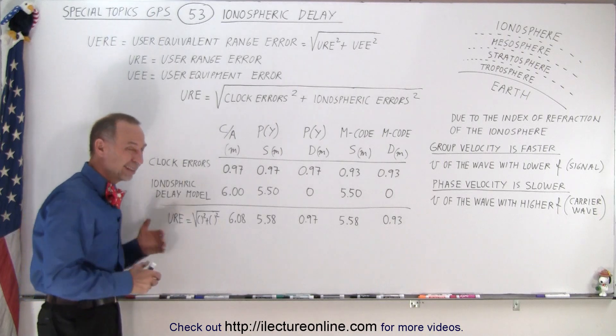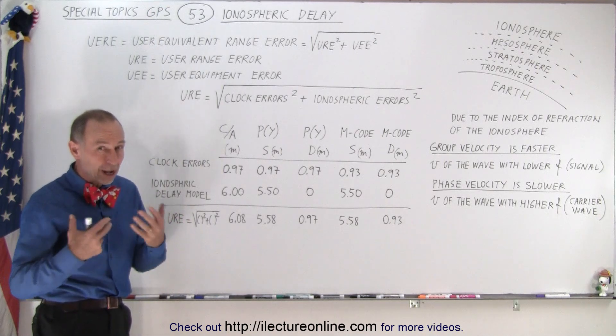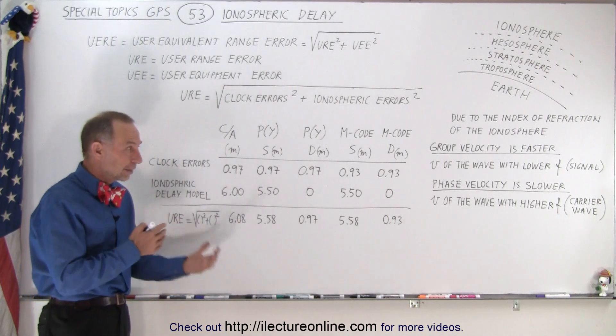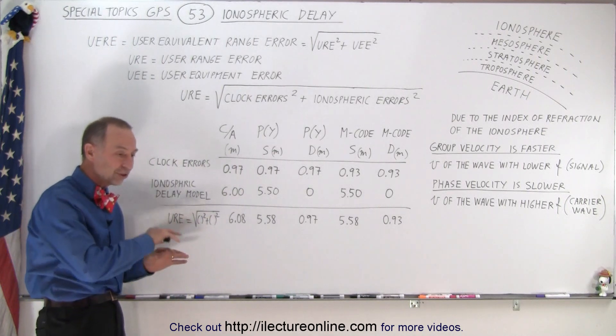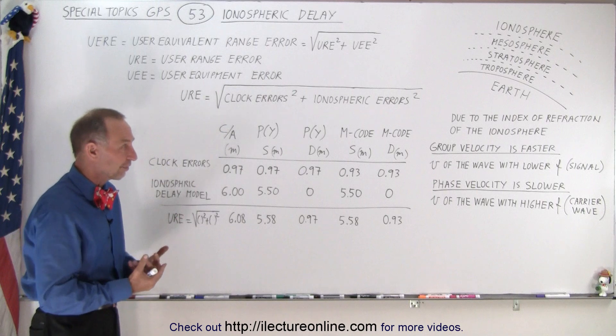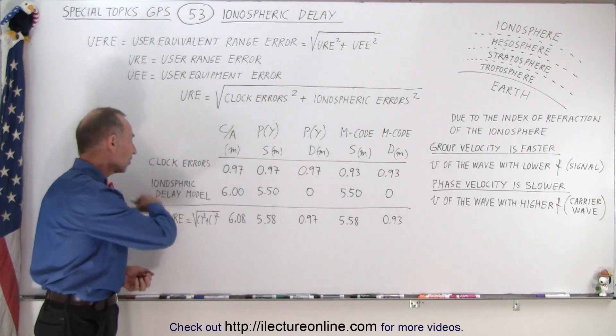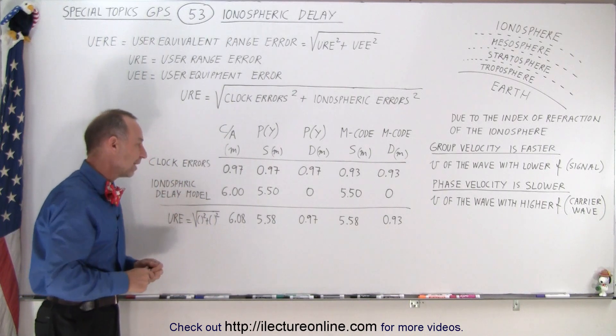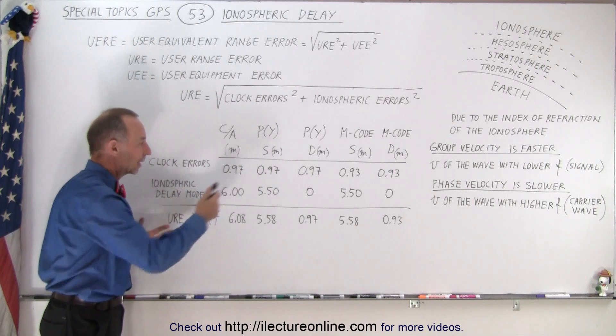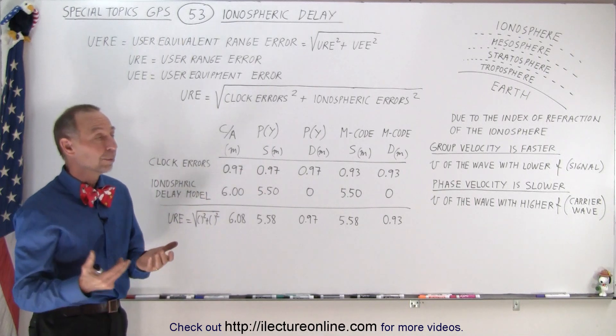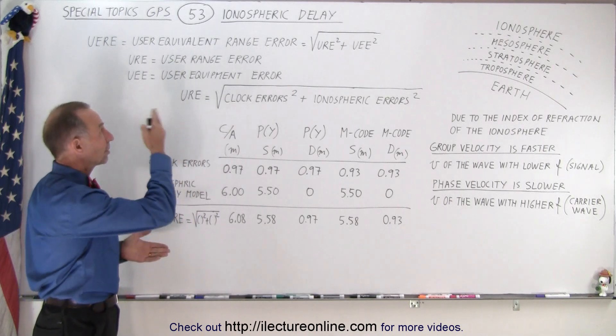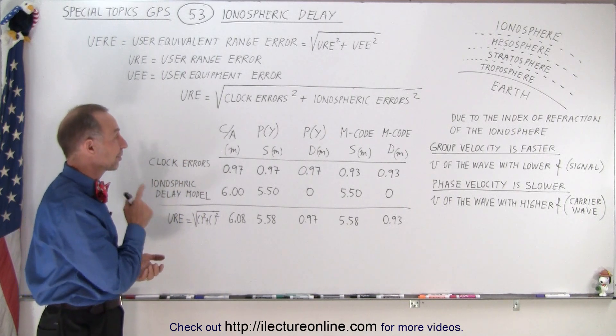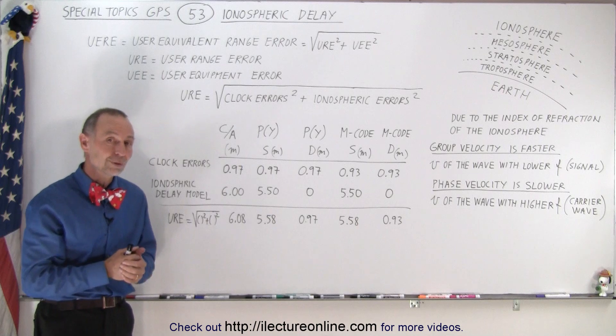This is based on a model. It turns out that the ionosphere is a very complicated thing, that the index of refraction changes between daytime and nighttime. It changes throughout the night, and it changes on the different atmospheric conditions. So obviously, we need to account for that, and we have a model that will then calculate what we think the delay will be based upon the conditions that we're facing.